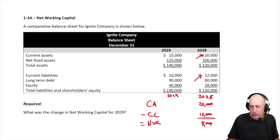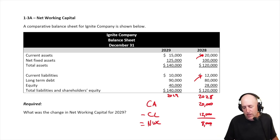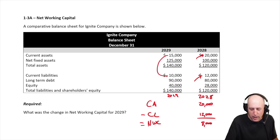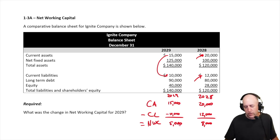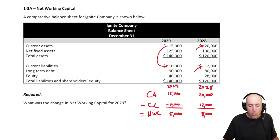In 2029, current assets are $15,000 and current liabilities are $10,000, so net working capital is $15,000 minus $10,000, which equals $5,000.